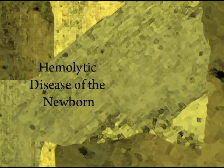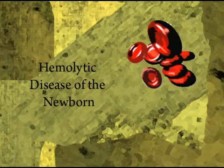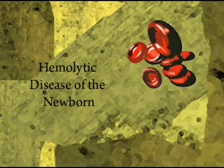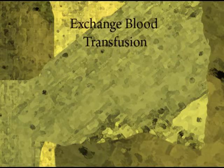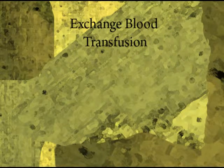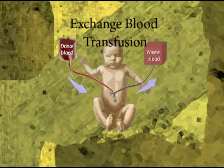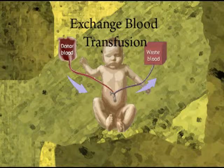Hemolytic disease of the newborn may cause the newborn's red blood cells to be destroyed rapidly. Very severe anemia caused by hemolytic disease is treated with an exchange blood transfusion, in which part of the newborn's blood is gradually removed and replaced with equal volumes of fresh donor blood. The exchange transfusion also removes bilirubin in the circulation, and thus treats the hyperbilirubinemia.